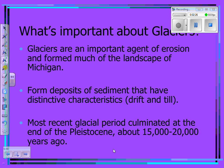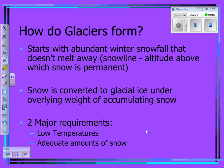The most recent glacial period culminated at the end of the Pleistocene era, about 15,000 to 20,000 years ago. Glaciers form where there is abundant winter snowfall that doesn't melt away. The snow line is the altitude above which snow is permanent, and the snow is converted to glacial ice under the overlying weight of accumulating snow.